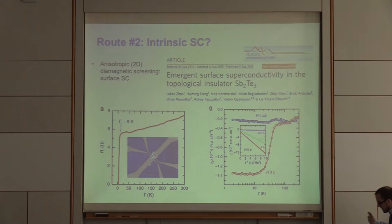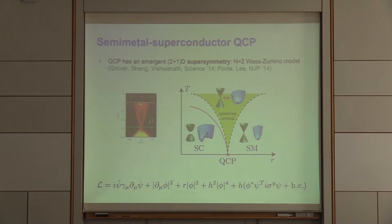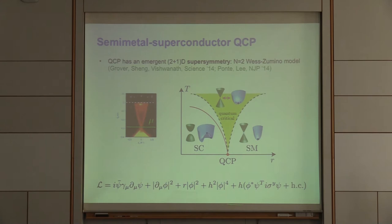At the quantum critical point, things become very interesting. It was shown that this quantum critical point has an emergent space-time supersymmetry in 2+1 dimensions, described by the so-called N=2 Wess-Zumino model. Starting from the Landau-Ginzburg Lagrangian with Dirac fermions and Cooper pairs, going beyond mean field reveals that the system flows to a fixed point distinct from both the Gaussian free field and the Wilson-Fisher fixed points, with a finite fermion-boson coupling — a different universality class.